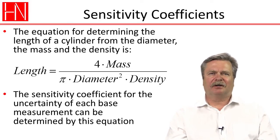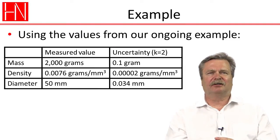I've taken some values. I've inserted the value from our ongoing example for the diameter measurement, where we measure 50 mm diameter and our uncertainty is 0.034 mm.